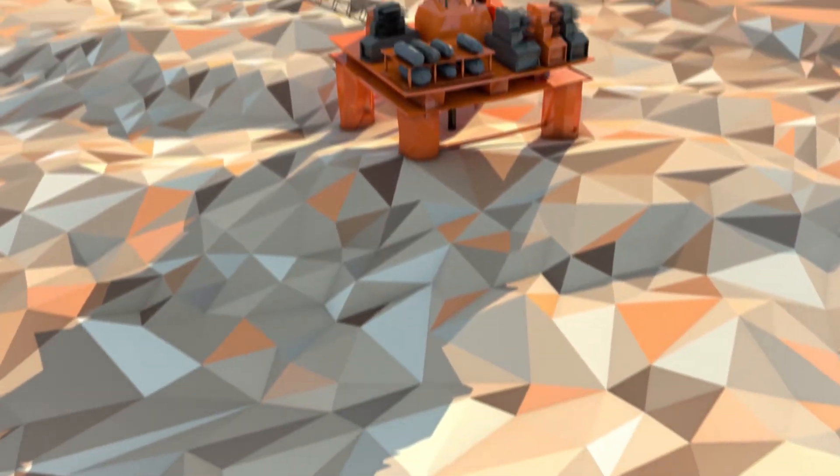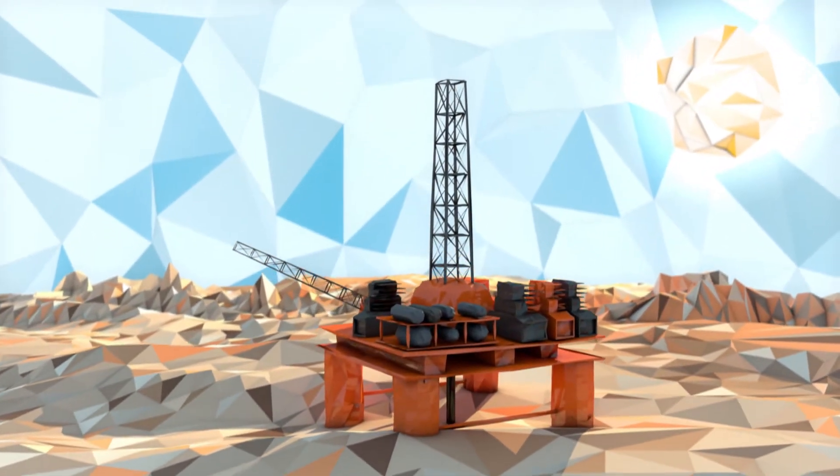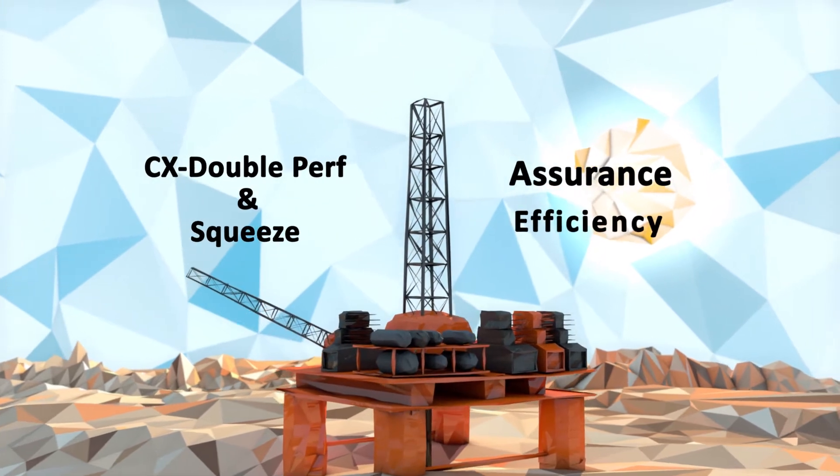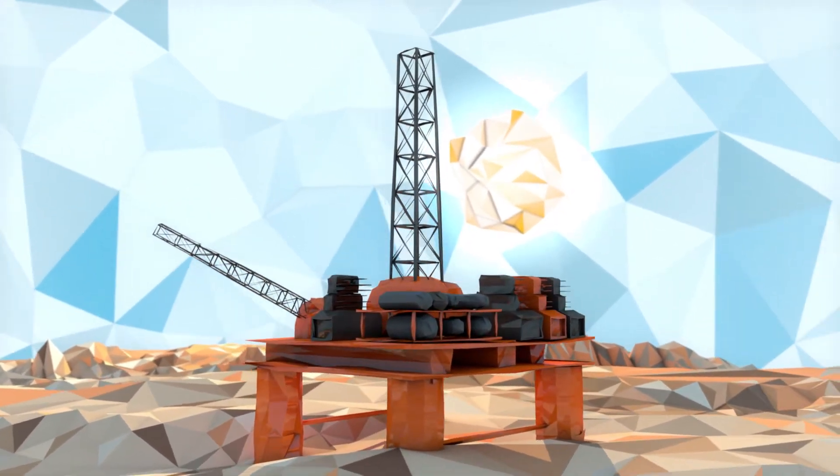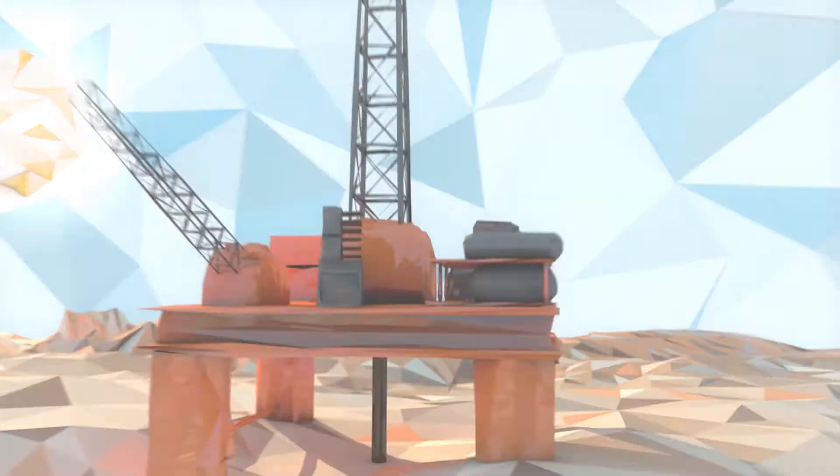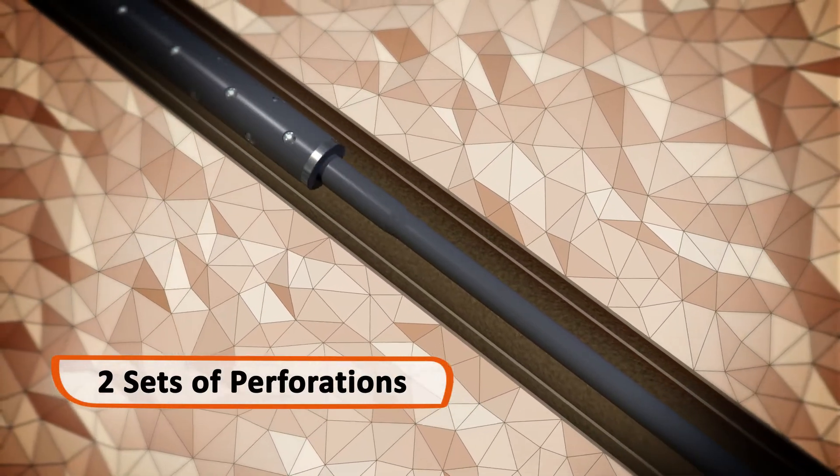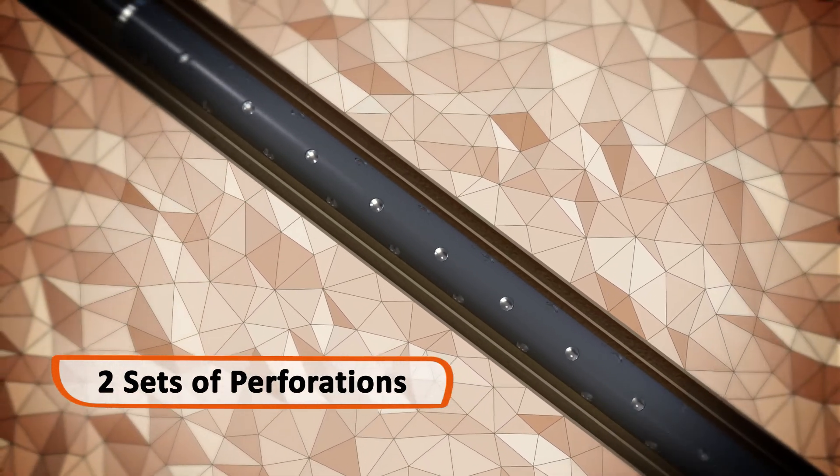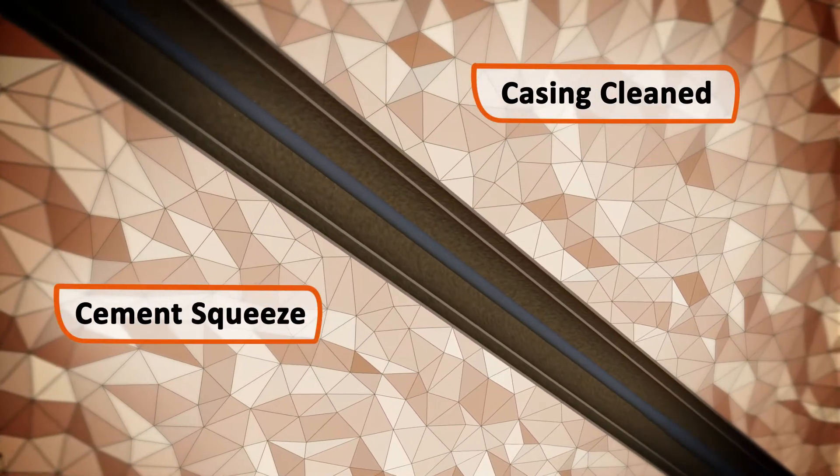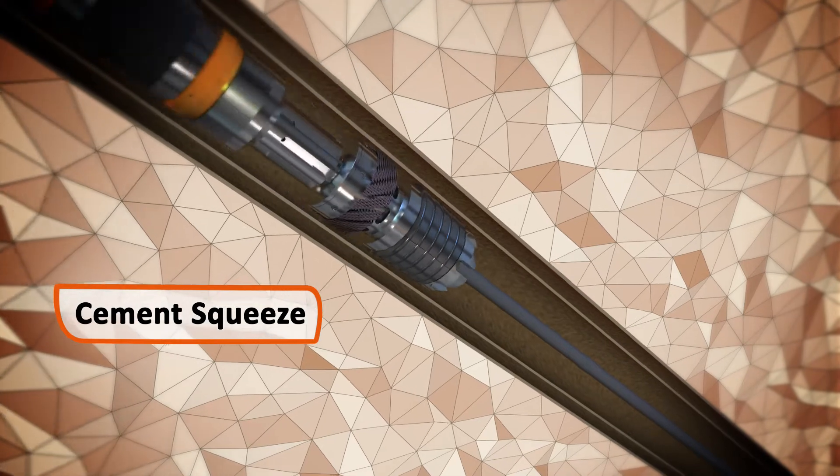Cortrax provides specialist well abandonment services, delivering assurance and efficiency. The Cortrax double perf and squeeze system allows for two sets of perforations to be made, the casing to be cleaned, and for a cement squeeze to be carried out in one trip.